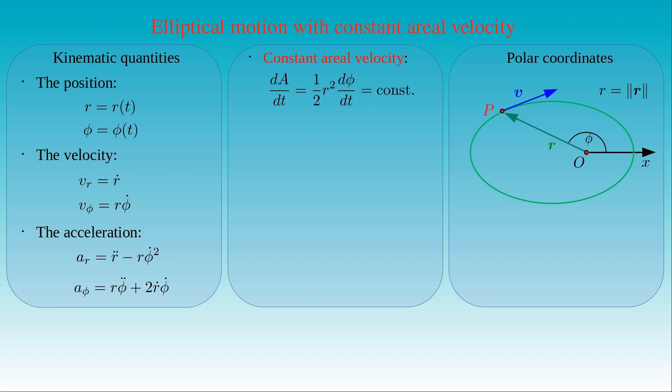By virtue of this equation, we can state that R squared times phi-dot is equal to a given constant C. Since the aerial velocity is constant, the aerial acceleration vanishes and the derivative of this equation is equal to zero. This gives the expression stating that two times R times R-dot times phi-dot plus R squared times phi double-dot vanishes.